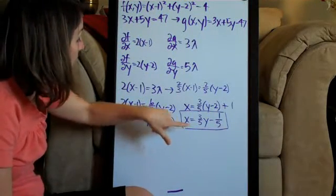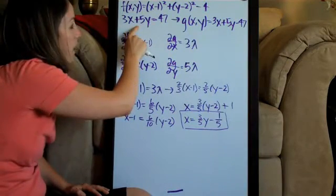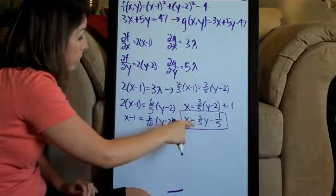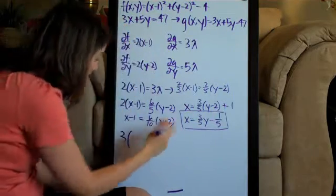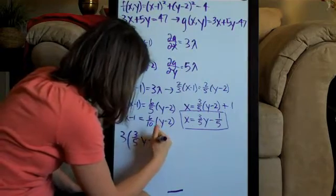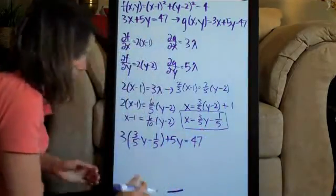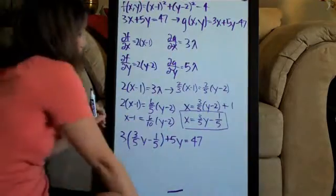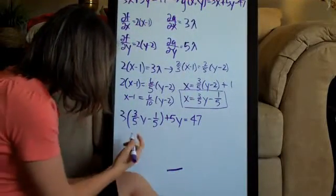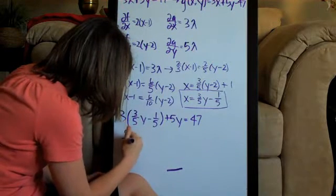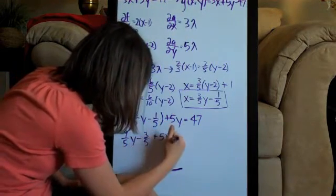We'll plug this in where we see x. So this is going to be 3 times what we solved x for: 3 fifths y minus 1 fifth plus 5y equals 47. Let me just boost this up a little bit so you guys can see this. We will have 9 fifths y minus 3 fifths plus 5y equals 47.